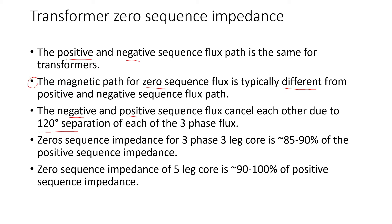Zero sequence impedance for three phase three leg core is about 85 to 90 percent of the positive sequence impedance. The zero sequence impedance of five leg core is about 90 to 100 percent of the positive sequence impedance. Shell form typically it's very close to the positive sequence impedance.